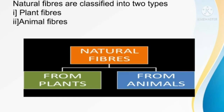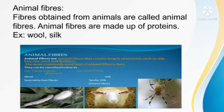In our last class, we learned about wool and wool-yielding animals. Animal fibers are made up of protein, while plant fibers are made up of cellulose. Human beings are also a kind of animal, so our hair and nails are also made up of protein.